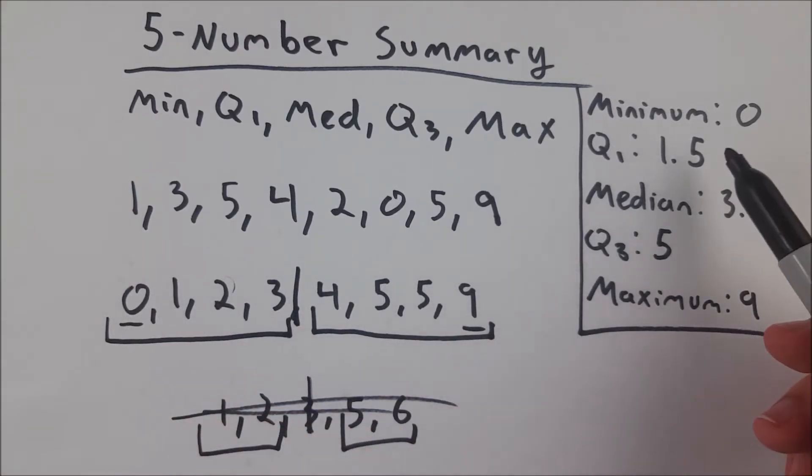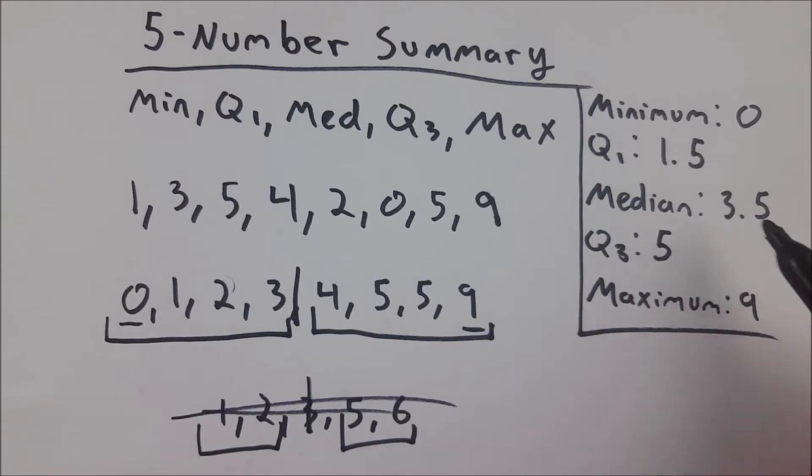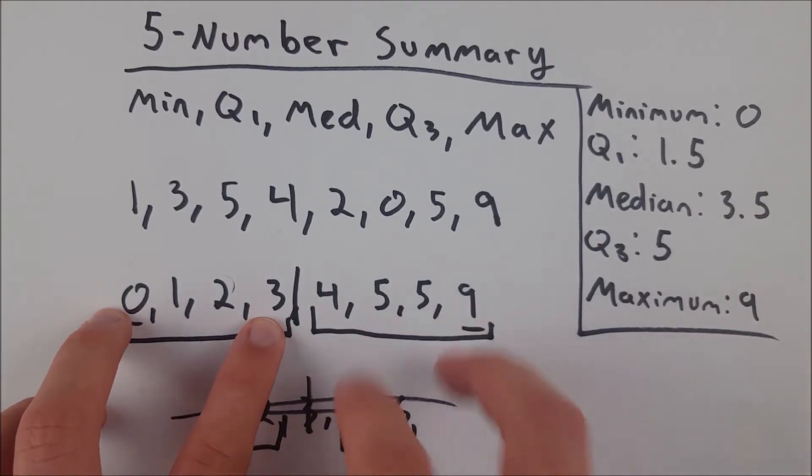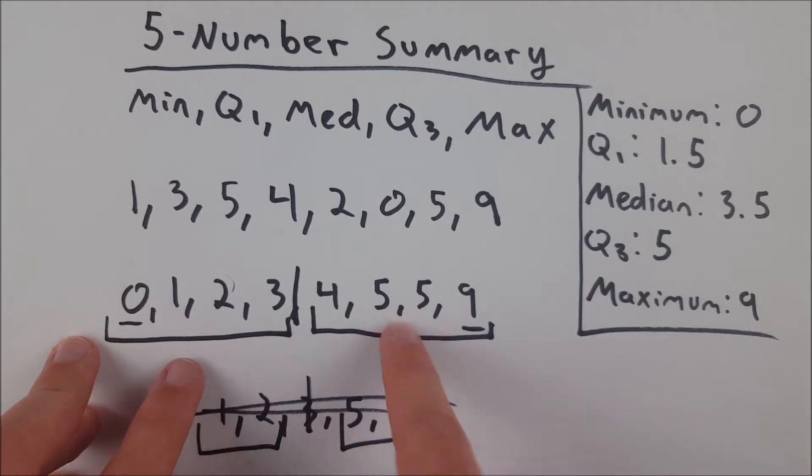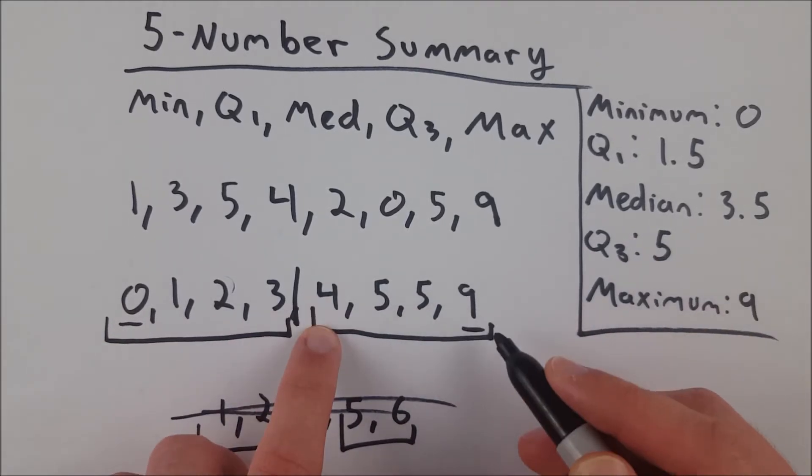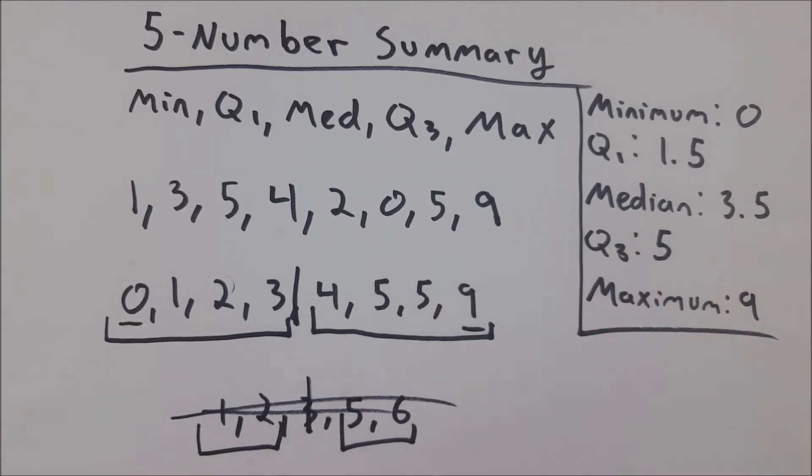The minimum is zero. First quartile is the median of the lower half of data. The median is 3.5, which is where we split the data into an upper and lower half. The third quartile is the median of the upper half of data. And of course, the maximum is the highest value in the data.